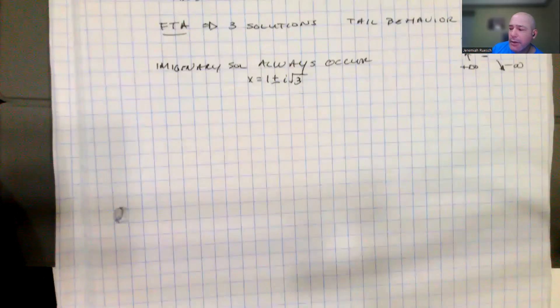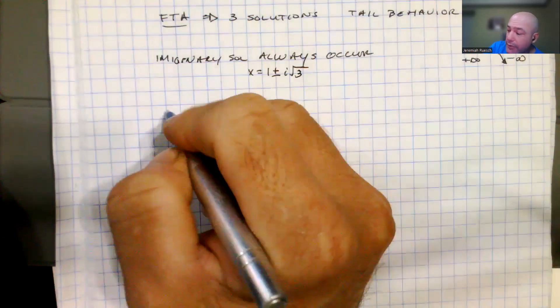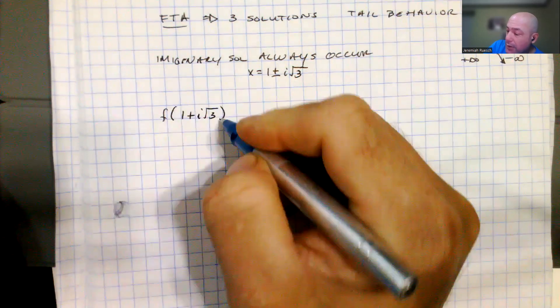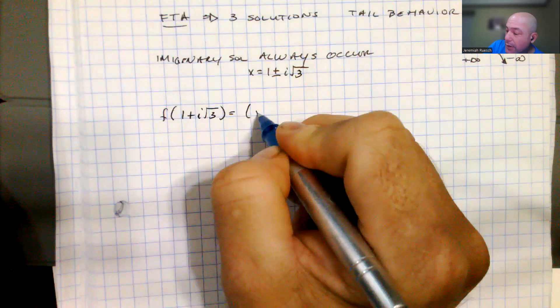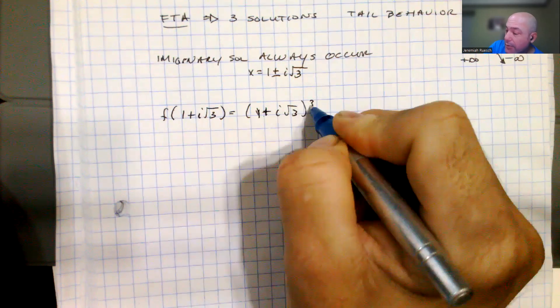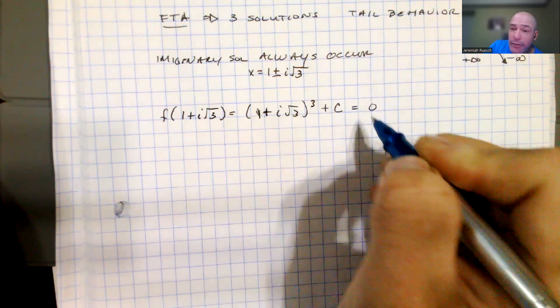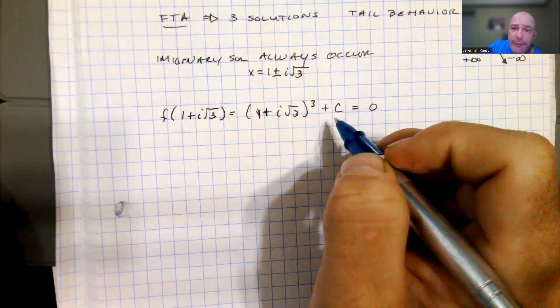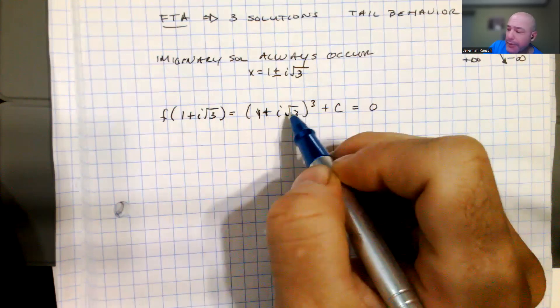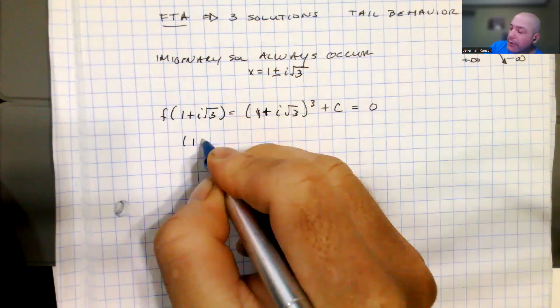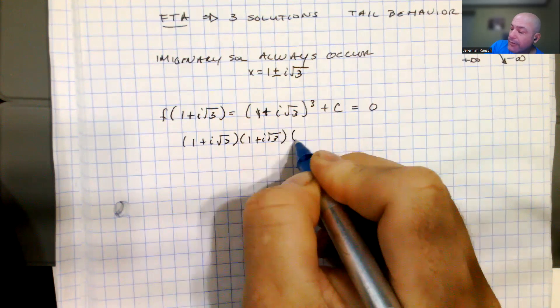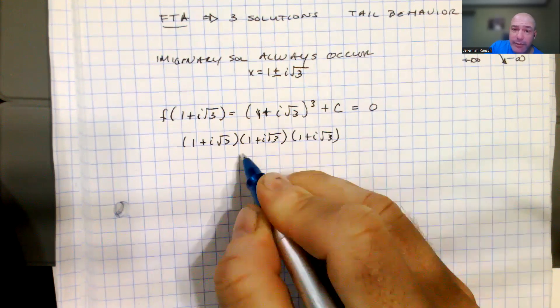So if we're going to plug in this root, we've got to figure out and determine what the constant value of c must be in order to solve this problem. So I'm going to plug in f of 1 plus i square root of 3 into the formula. So x is 1 plus i square root of 3, and I'm going to cube that plus the constant term c, and that's going to equal zero. So the algebra we have to do is to multiply this out. I usually like to do this in steps to avoid as many mistakes as possible.